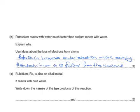So rubidium is also an alkaline metal that reacts with cold water. The names of the two products would be rubidium hydroxide and, of course, hydrogen.